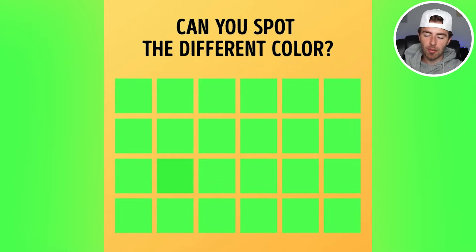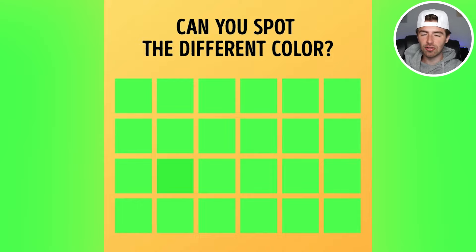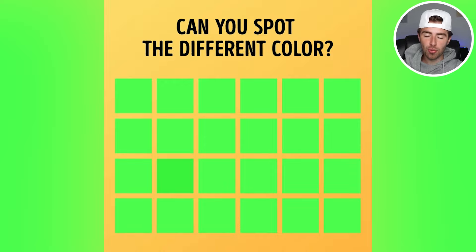Can you spot the different color square? Comment down below 'square' so I know you found it. Only 3% of people can actually find the square that's a different color, so if that's you, you've got to flex and comment it down below.